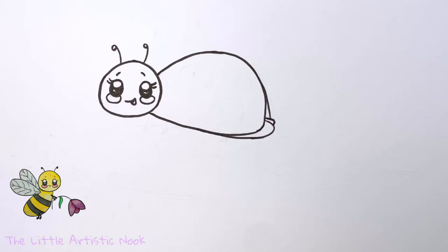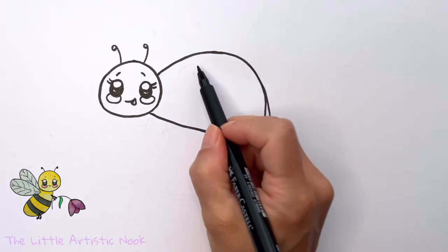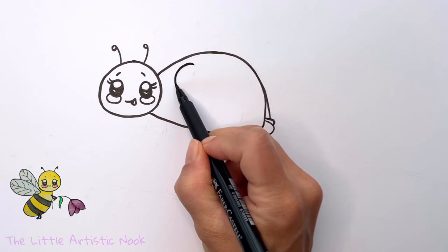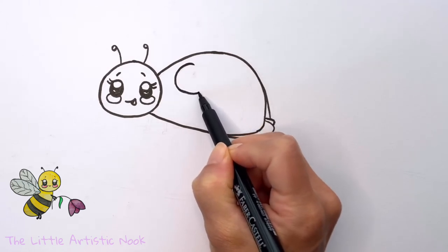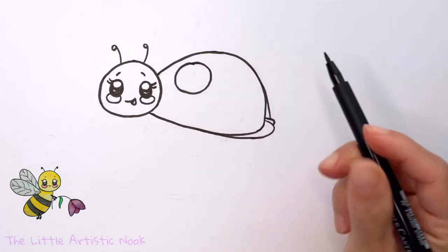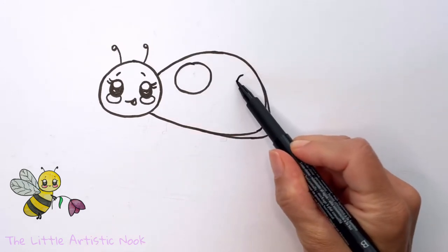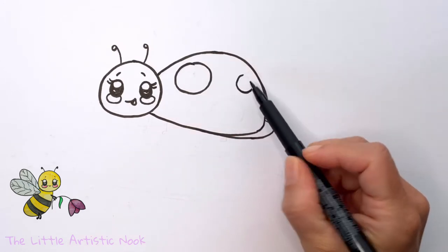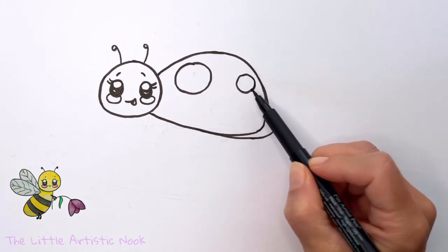And of course we're going to add in those classic spots that we always see on our little ladybirds by just drawing out some nice big circles on her back. So I'm going to just make maybe three and I'm going to have them big but not necessarily all the same size.